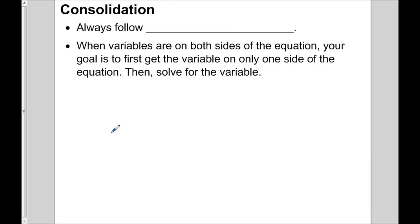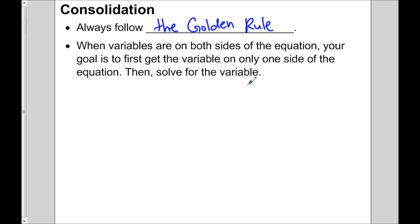When solving any equation, we always follow the golden rule: whatever you do on one side of the equation, you have to do the exact same thing on the other side. When variables are on both sides, your goal is to first get the variable on only one side, then solve by adding and subtracting. I hope this has made solving equations with variables on both sides clear — best of luck with your equation solving.